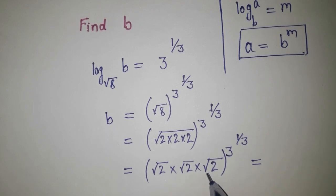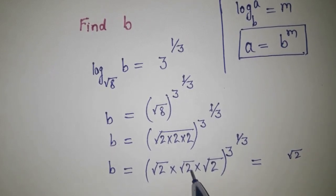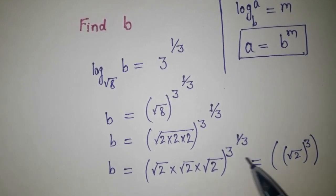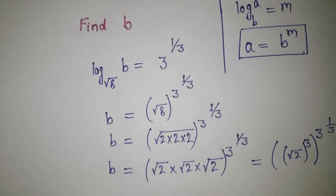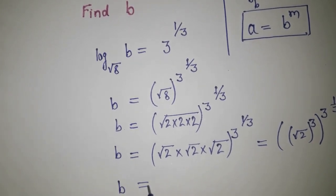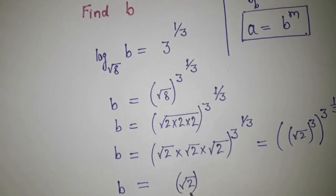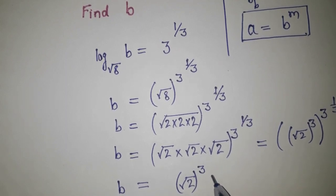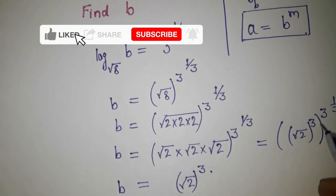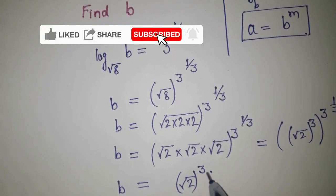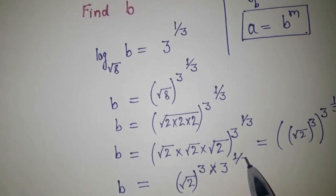And we can write this — all of this will be B. So root 2 appears 1, 2, 3 times — three times — so its power will be 3, and there is the exponent over here. So B equals root 2 to the power 3, and this exponent will multiply together: 3 multiply 3 into 1 by 3.